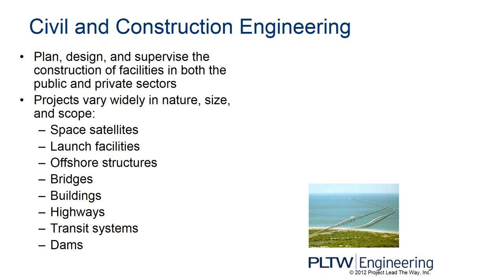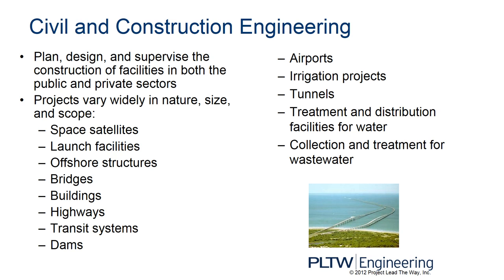Civil engineering also covers transit systems such as subways and trolley lines in San Francisco, dams that provide hydroelectric power, airports, irrigation projects, tunnels, and skyscrapers. One of the most important things civil engineers have done for society is the treatment and distribution of water — both wastewater, storm drainage, and fresh drinking water. Civil engineers have in many ways saved millions, if not billions, more lives than a doctor ever has by providing clean drinking water and safely removing waste.